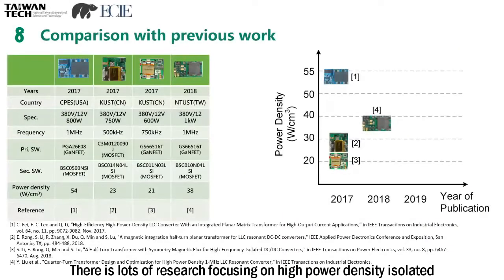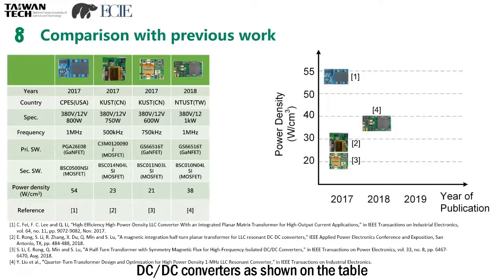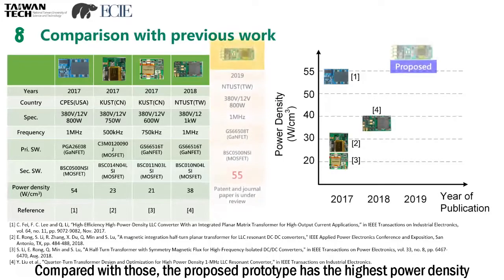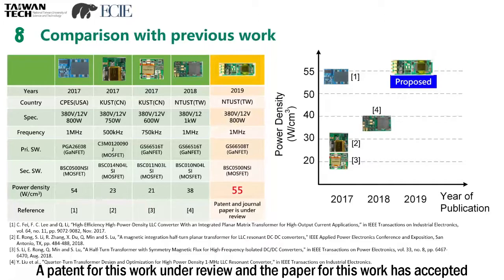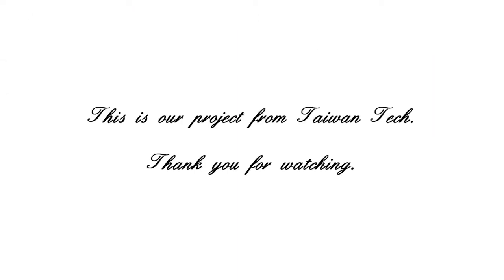There are many research works focusing on high power density isolated DC-DC converters as shown in the table. Compared with those, the proposed prototype has the highest power density. A patent for this work is under review and the paper has been accepted. This is our project from Taiwan Tech. Thank you for watching.